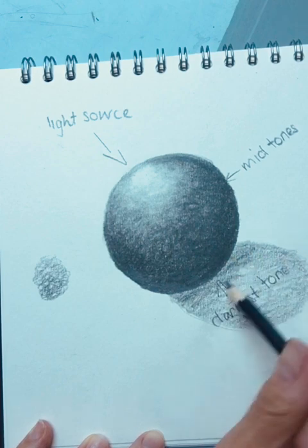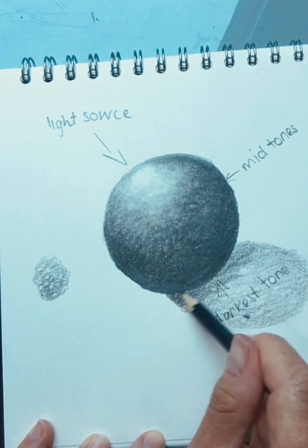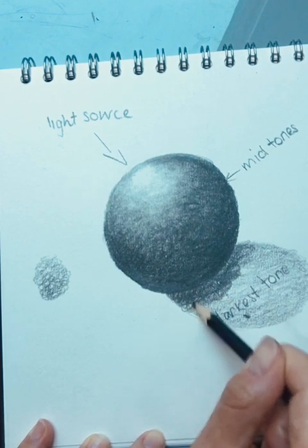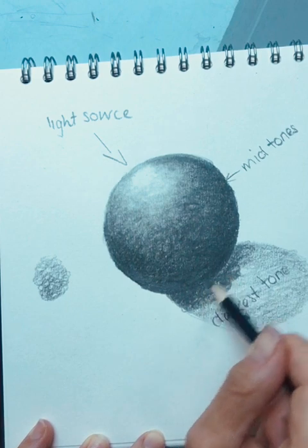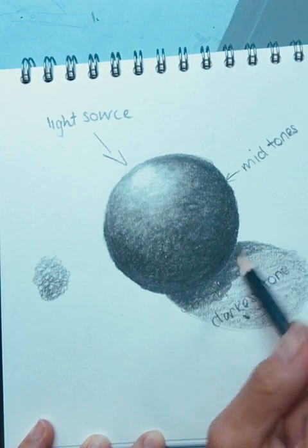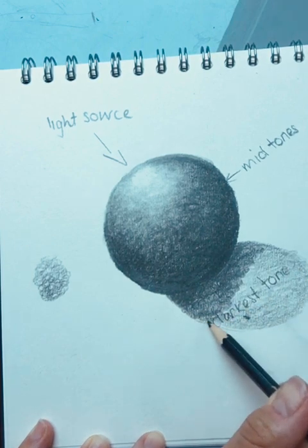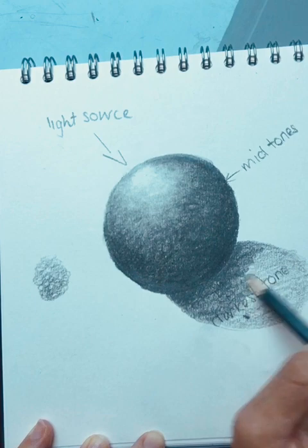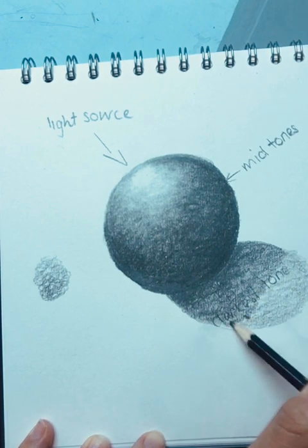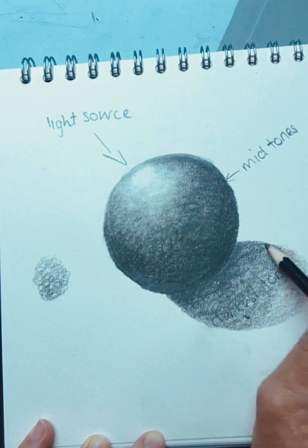Right, so darkest areas are going to be right at the bottom here. Almost met in what you have in your sphere. So keep going round and round to create our shadow. As if it were sat on a table or on the floor.